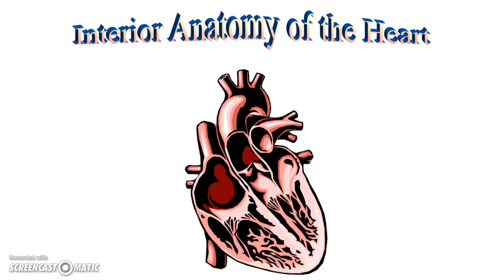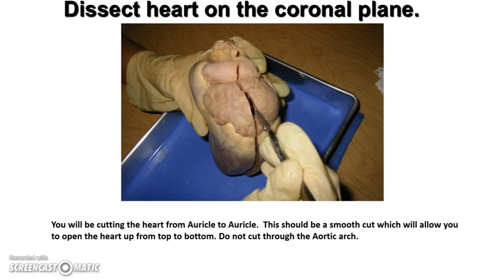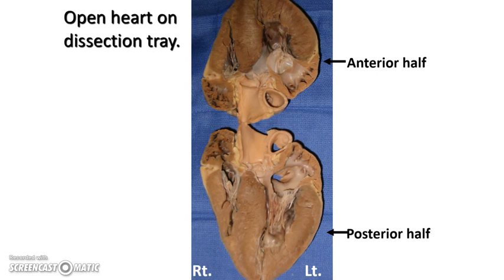This brings us to the interior anatomy of the heart. During dissection, we'll cut on the coronal plane — one big cut from auricle to auricle: go from the left auricle down to the apex, flip it over, go from the right auricle down to the apex. You may need to use your scalpel to slice a few fibers open to lift it open. When you open your heart on your dissection mat, you should see the top and bottom halves. Remember, the right is actually the left and the left is actually the right.